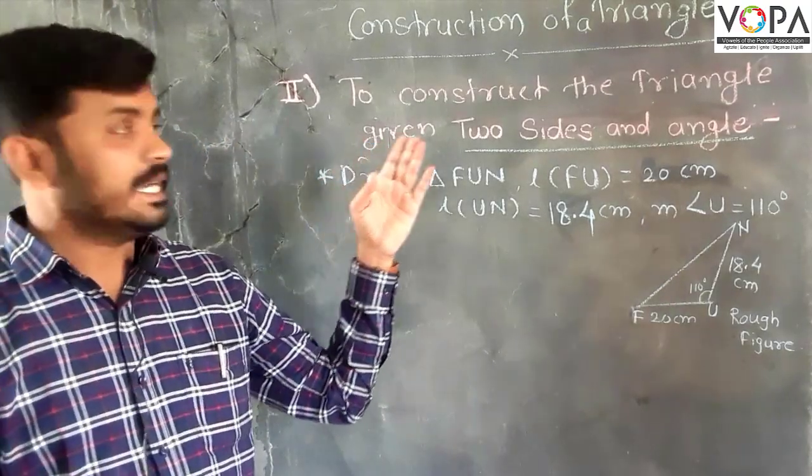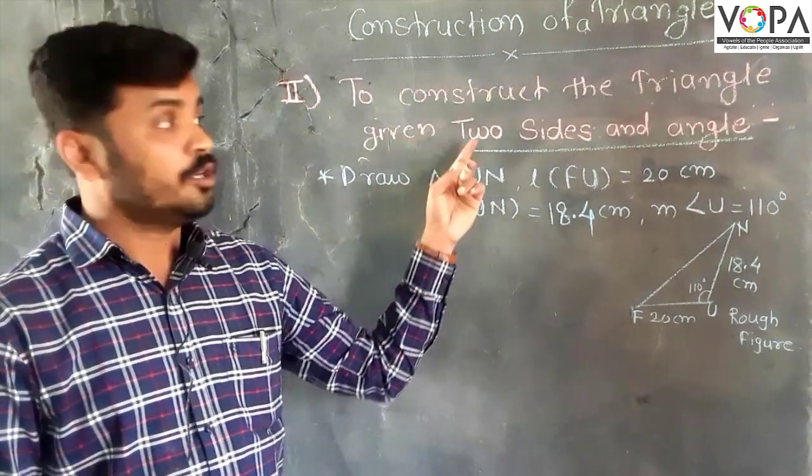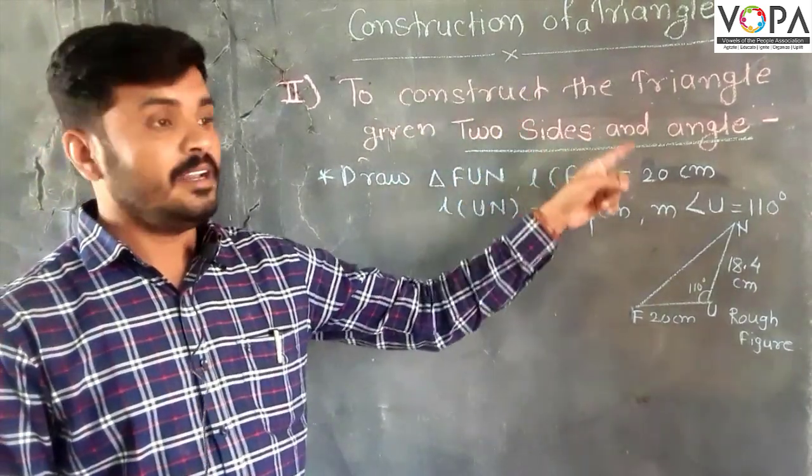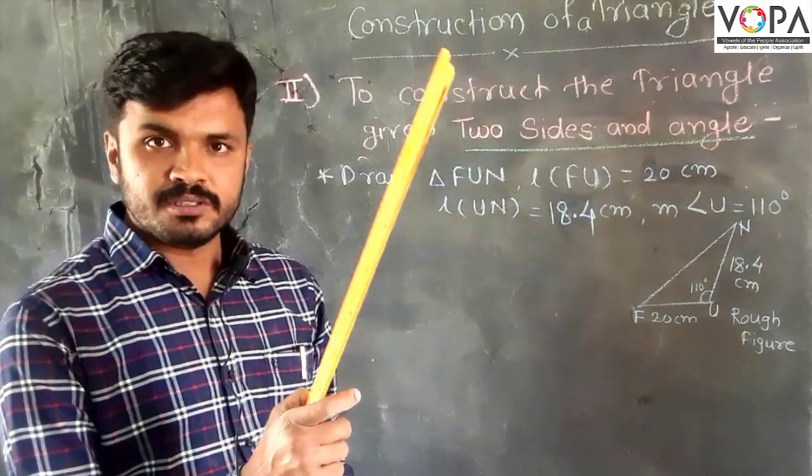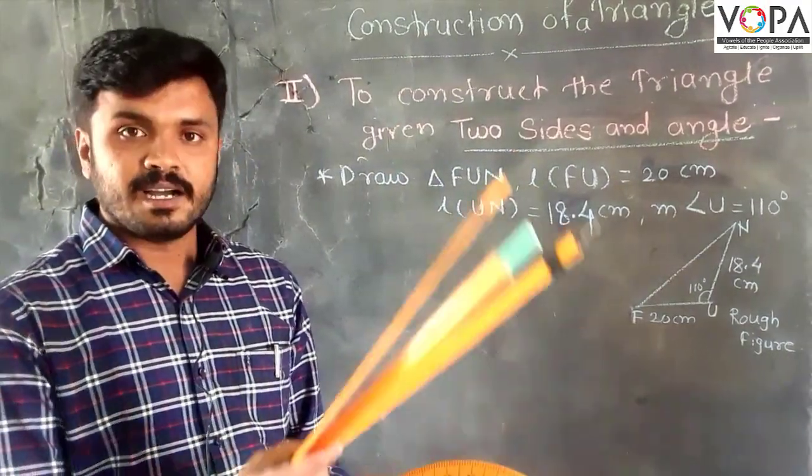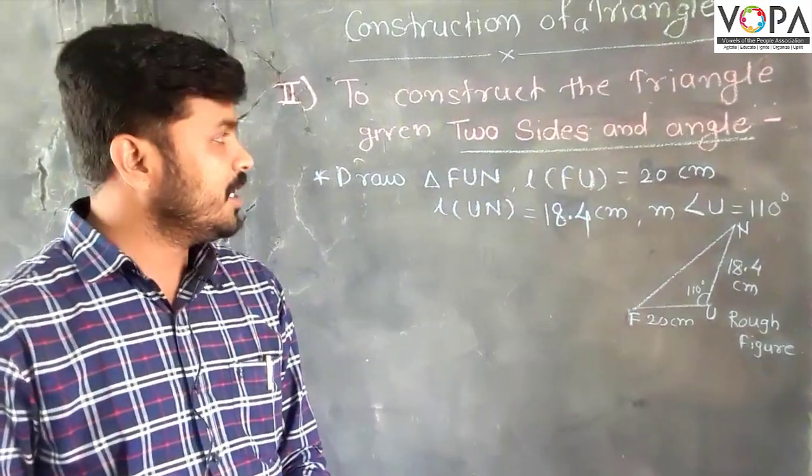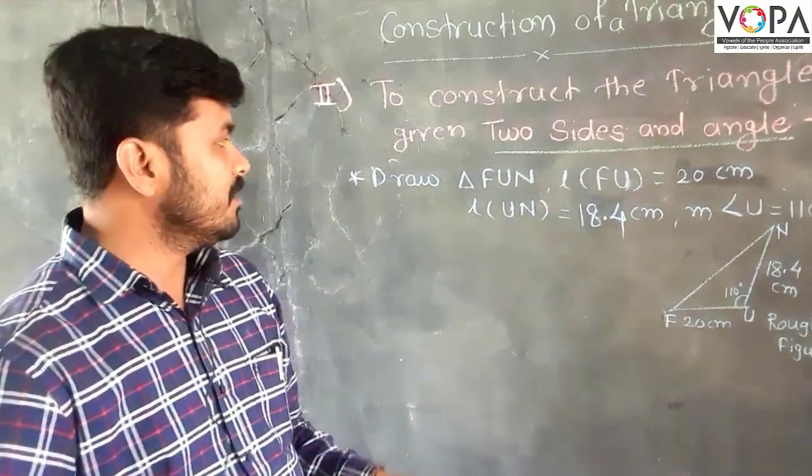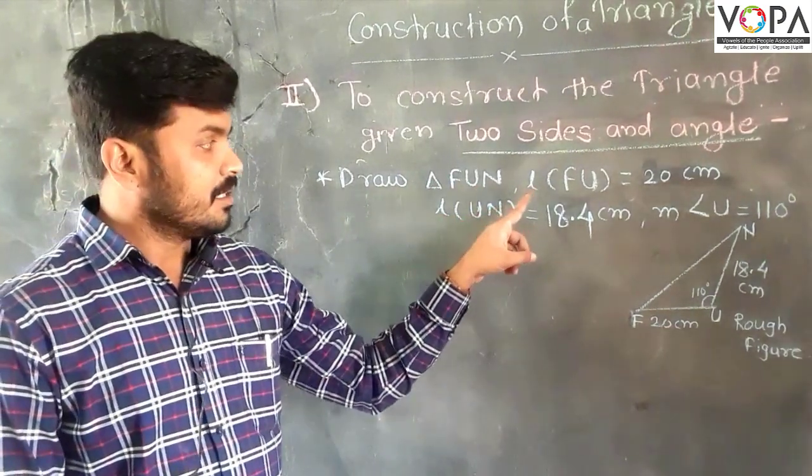We construct a triangle of the second type: to construct the triangle given two sides and the angle included between those two sides. For that, we use a ruler, compass, and protractor. Now the question is: draw triangle FUN.